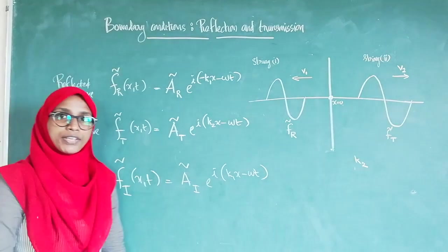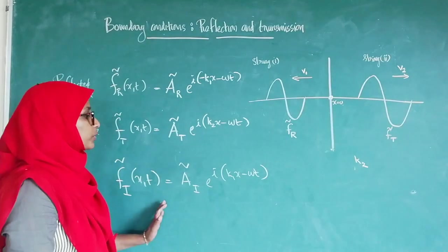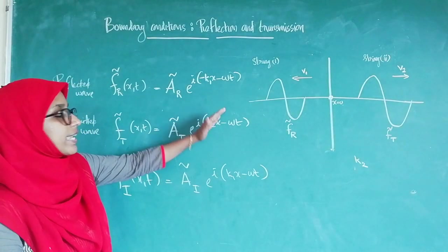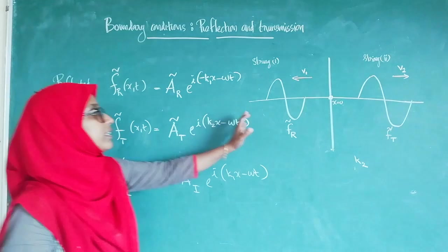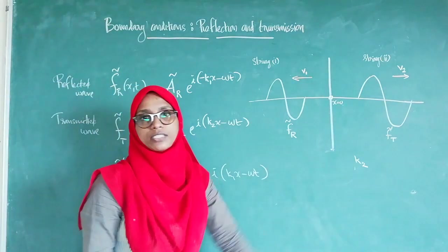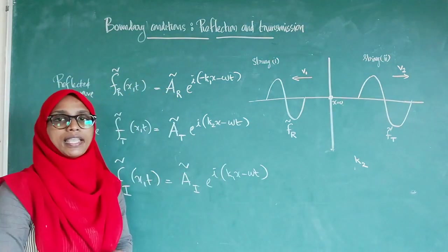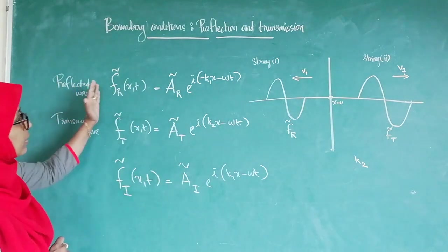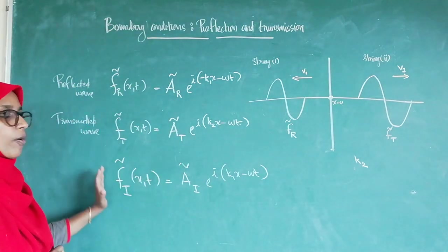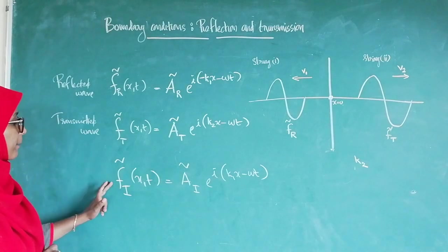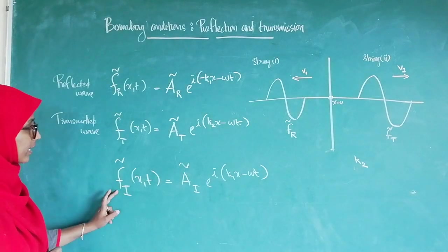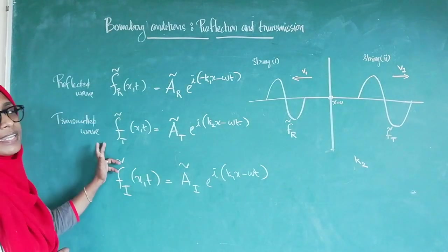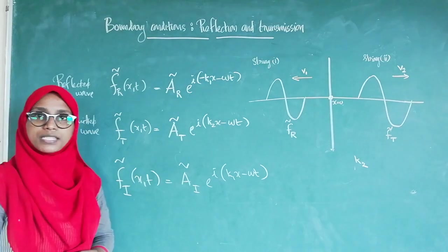When we go through the directions and the components K1, K2, etc. in the figure already explained, these three complex representations become clear — representing the incident wave, reflected wave, and transmitted wave.